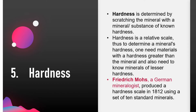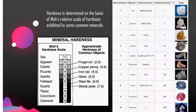Hardness is the ability to resist being scratched, and it is one of the most useful properties for identifying minerals. Hardness is a relative scale — to determine a mineral's hardness, one needs materials with a hardness greater than the mineral and also needs to know minerals of lesser hardness. Friedrich Mohs, a German mineralogist, produced a hardness scale in 1812 using a set of 10 standard minerals. Mohs hardness scale arranges the minerals in order of increasing hardness from 1 to 10, listed here along with the hardness of some common objects.